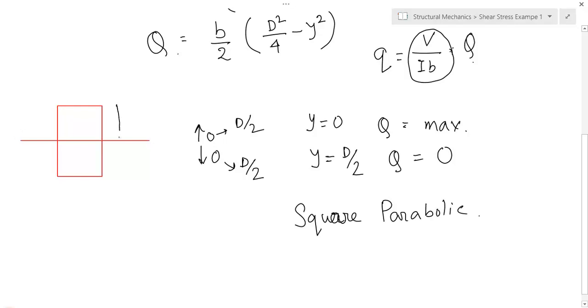Let's draw the distribution. From the extreme edges, y equal to d by 2. So, the shear stress will be 0. As at y equal to 0, shear stress is maximum. So, the distribution of the shear stress will be like this and will be symmetric here.